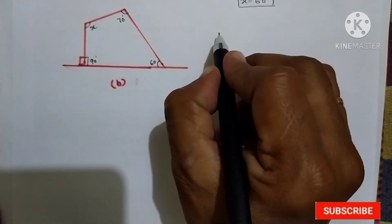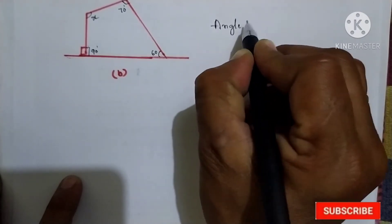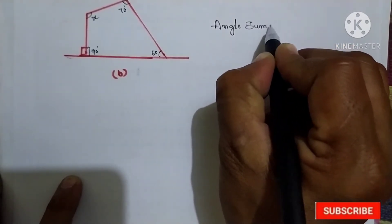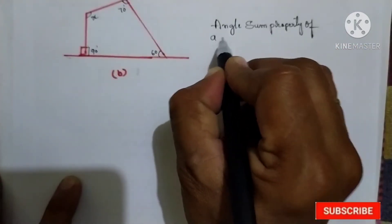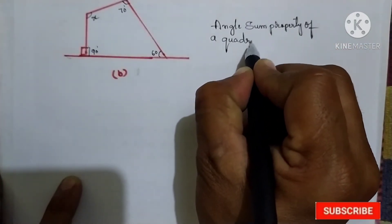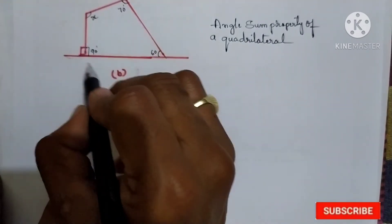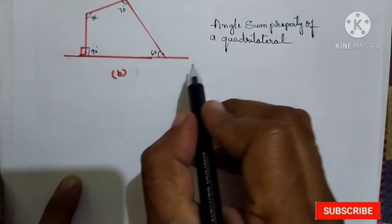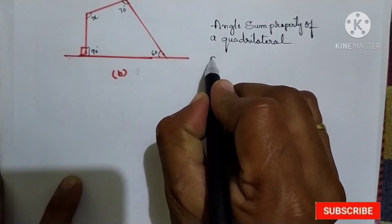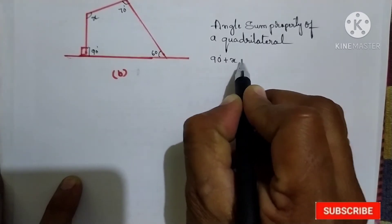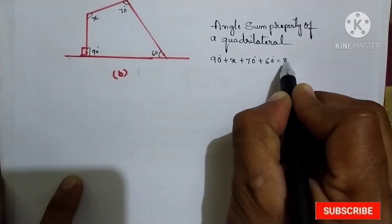So now here we have to use the angle sum property of a quadrilateral. That means all 4 angles — 1, 2, 3, 4 — the sum of all 4 angles of this quadrilateral is equal to 360 degrees. So first we take: 90 plus x plus 70 plus 60 degrees is equal to 360 degrees.